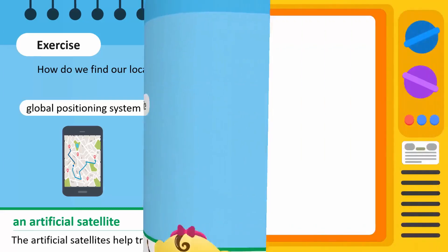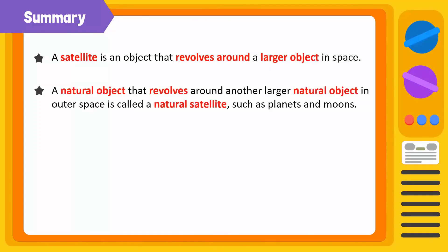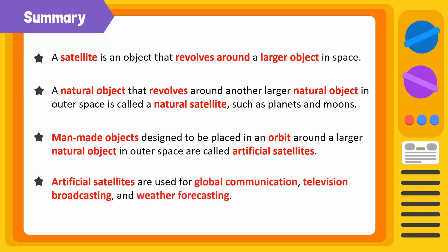Time to summarize! A satellite is an object that revolves around a larger object in space. A natural object that revolves around another larger natural object in outer space is called a natural satellite, such as planets and moons. Man-made objects designed to be placed in an orbit around a larger object in space are known as artificial satellites. Artificial satellites are used for global communication, television broadcasting, and weather forecasting.